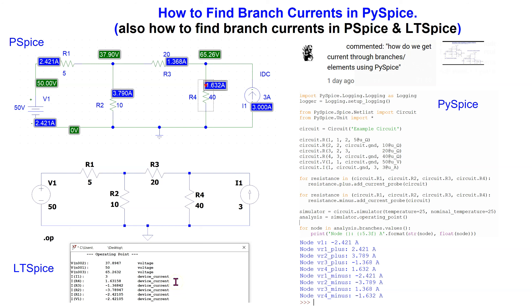Hello everyone. In this video we will look at how to find branch currents when running DC operating point simulations. This topic was actually suggested by a subscriber in one of the comments on a video in this channel. Although the topic of DC operating point simulations is covered in detail in other videos in this channel, I decided to do a video focusing on finding branch currents for the benefit of viewers.